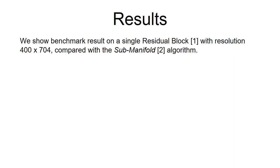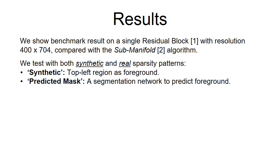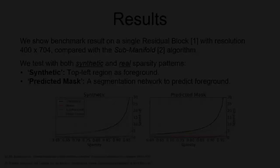We show a benchmark result on a single residual block with resolution 400x704, compared with a submanifold algorithm. We test both synthetic and real sparsity patterns. For the synthetic experiment, the top-left region is treated as the foreground, while in the predicted mask experiment, a segmentation network is used to predict the foreground. As shown in the figures, a speedup of up to an order of magnitude is possible on the residual blocks.